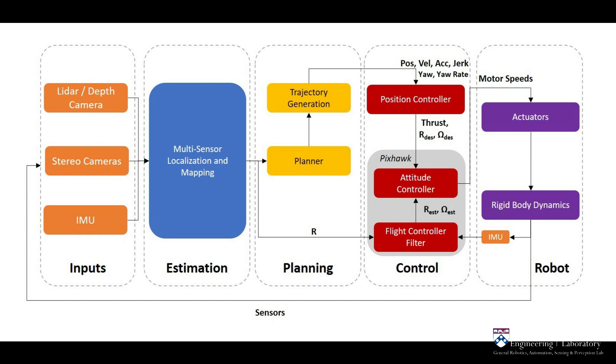The control module takes in the planned trajectory and outputs the desired motor speeds for the robot to execute.